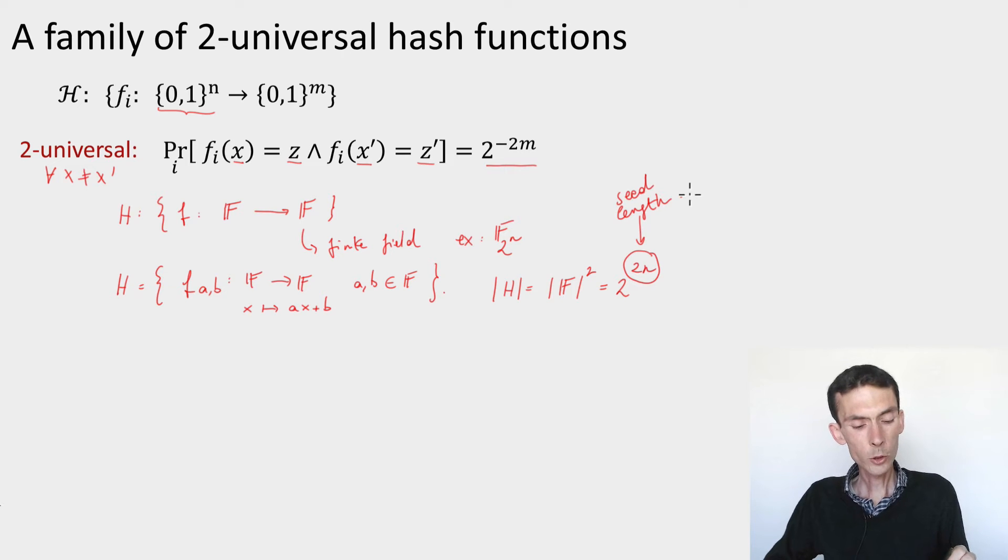Okay, why is this a family of two universal hash functions? We need to check the condition. So let's take x different from x prime, z and z prime, and evaluate this probability.